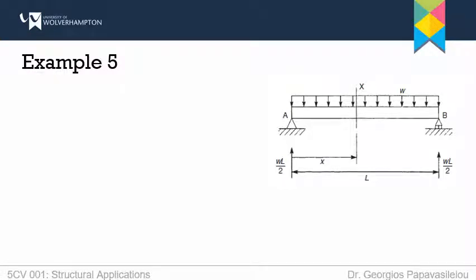This is a very interesting example because we will see something strange — and of course we will see also how to work around this issue. As always, to solve an example, I start by substituting all supports with their reactions. Here I have RAY, RAX, and RBY. This would be my free body diagram, implying that the supports are not there, only the reactions.